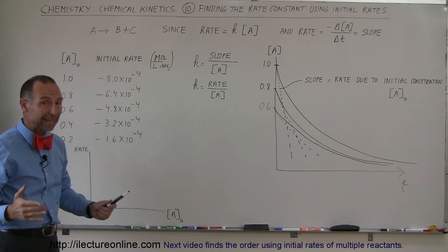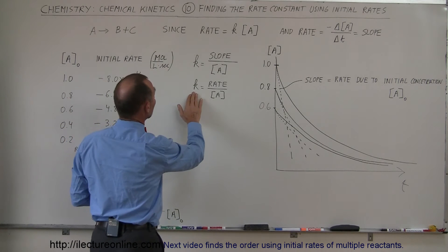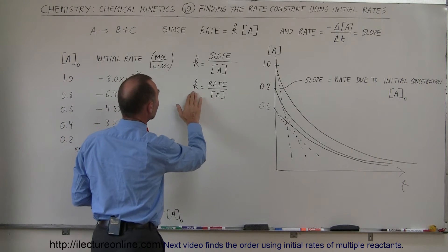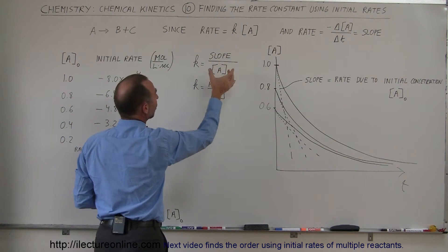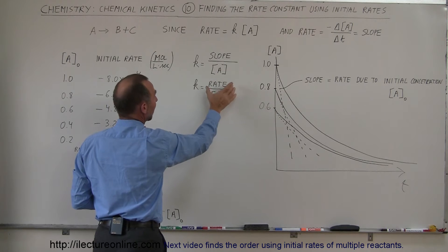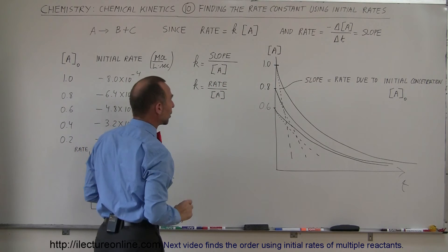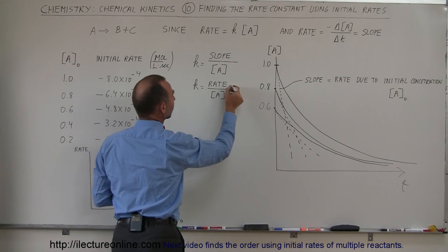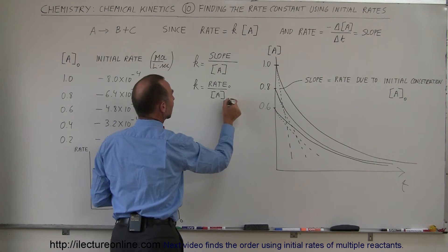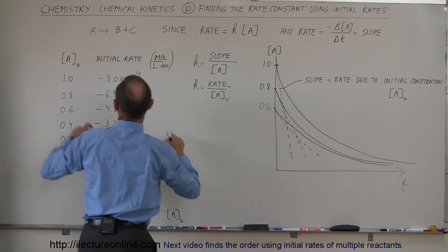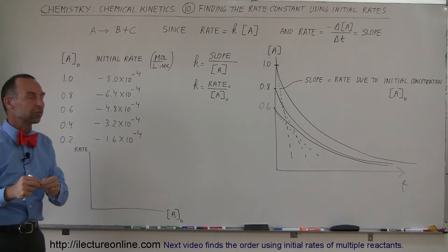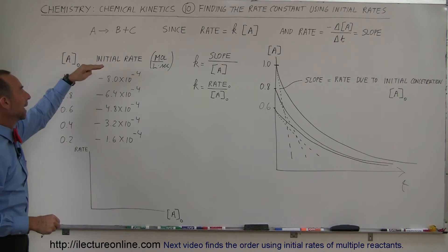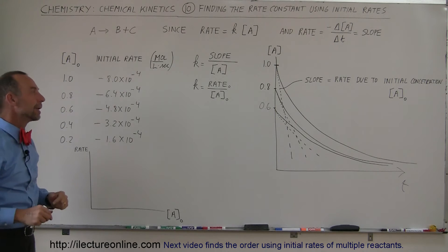What we can then conclude is that the rate constant is simply equal to the slope divided by the concentration, which is the same as saying the rate divided by the concentration. We're talking here about the initial rate and the initial concentration — the initial concentration and the initial rate of the reaction.